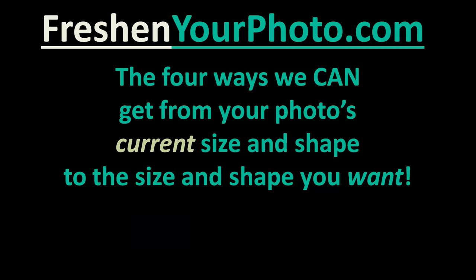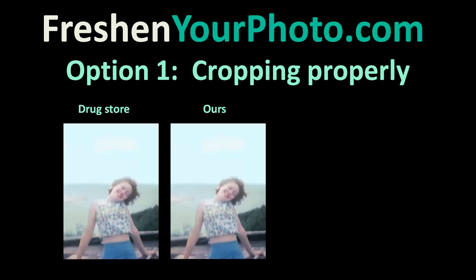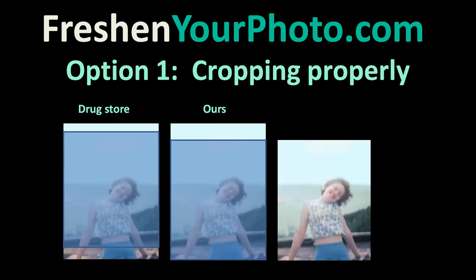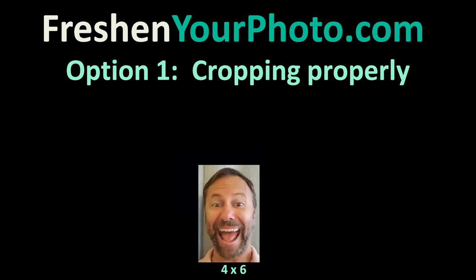So we're going to look at other methods we can use to make the shots right. The four ways we can get you from your photo's current size and shape to the size and shape you want. The first way is with cropping properly. Some shots lend themselves to better cropping. The drugstore is just going to take the middle out and cut her hands out, cut her hips out. But because we're doing it manually using Photoshop, we're going to take the right part of the picture so that when it's copied and enlarged, it's just what you would have wanted. That works great for this shot, but not so well for this shot — we would lose the top or the bottom of the picture.